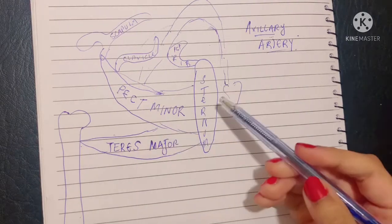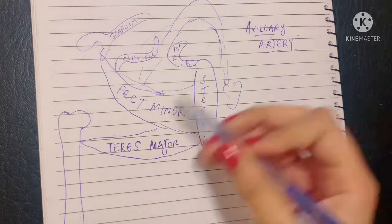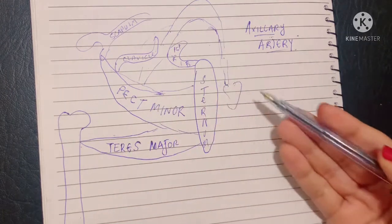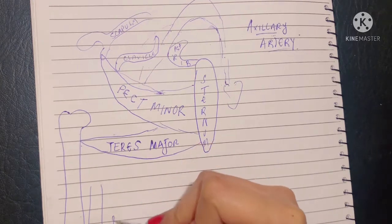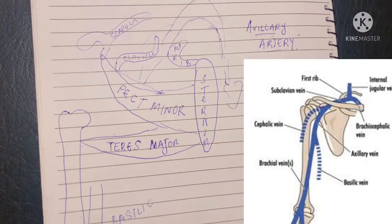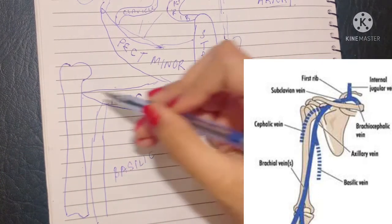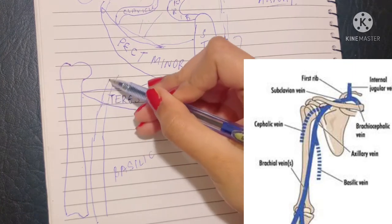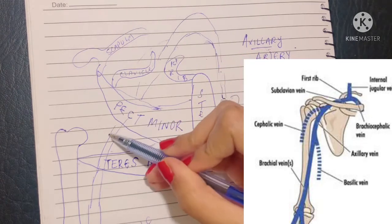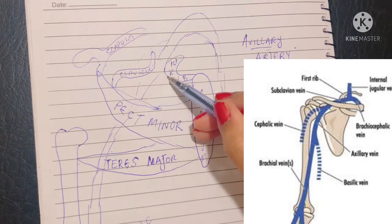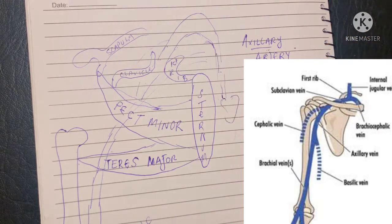Similar to the artery, another content of the axilla is the axillary vein. Since veins carry blood toward the heart, the axillary vein begins as the basilic vein of the arm. When the basilic vein reaches the lower border of teres major, it becomes the axillary vein, traveling the same pathway as the axillary artery. At the outer border of the first rib, the axillary vein continues as the subclavian vein, which finally returns blood to the heart.